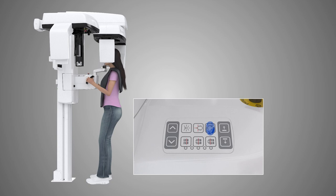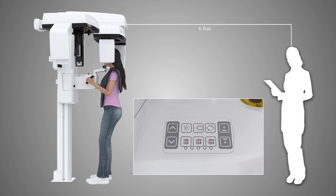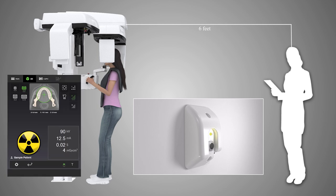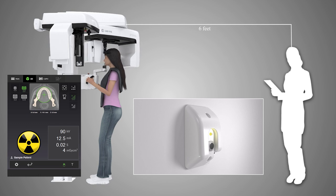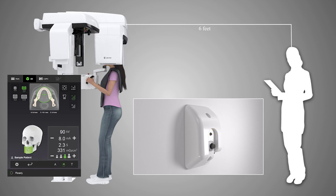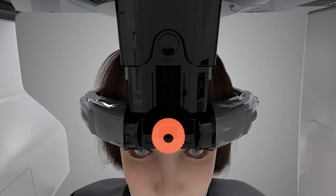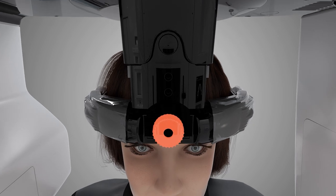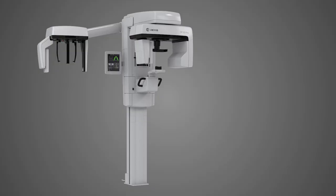Press the start button on the positioning panel. Move a safe distance away of at least six feet or behind a suitable x-ray shield while maintaining line of sight to the patient during exposure. Press and hold down the exposure button. The rotating unit rotates around the patient's head. An audible signal and the exposure warning symbol on the touch screen will appear. Once the image has been acquired, the rotating unit and the audible signal stop. Release the exposure button. Release the temple support using the adjustment knob and carefully guide the patient out of the unit. Remove all disposable covers and disinfect the unit following the directions in the user manual.